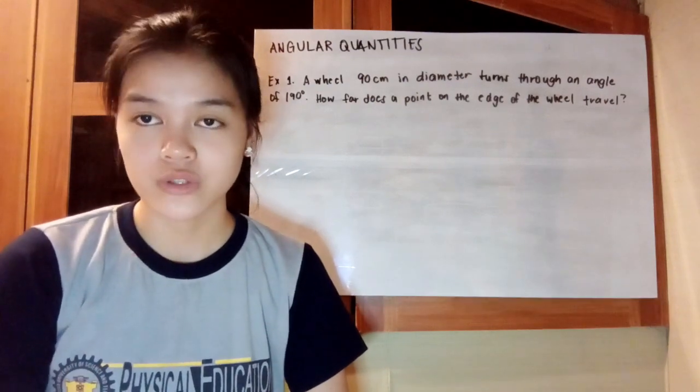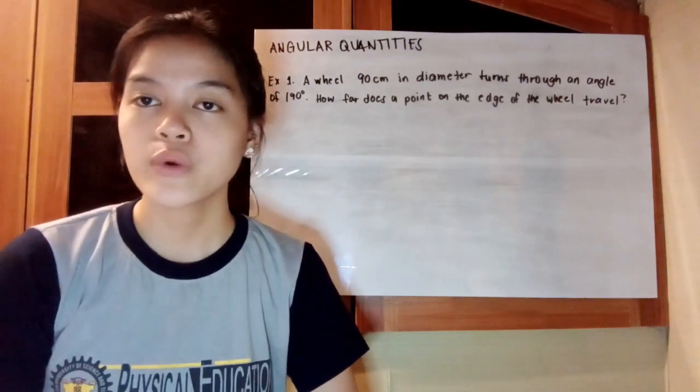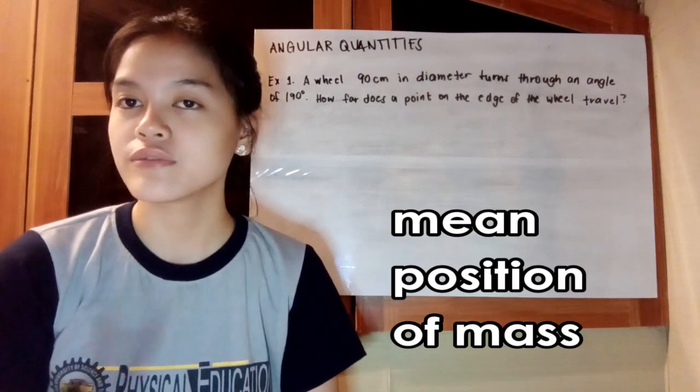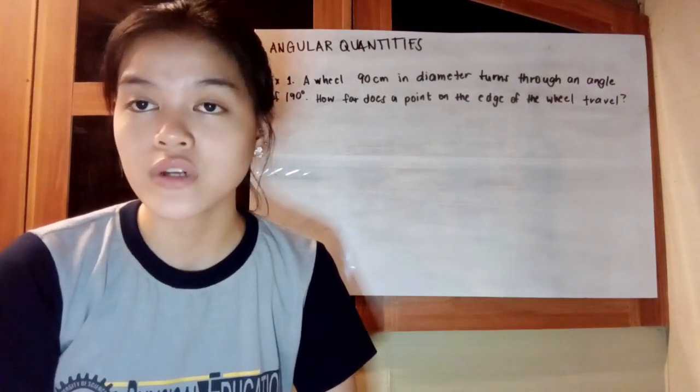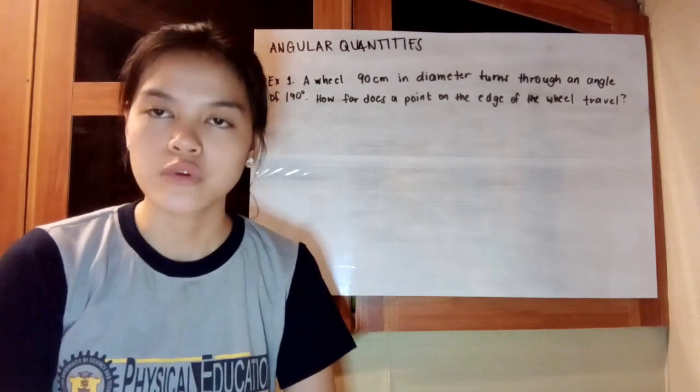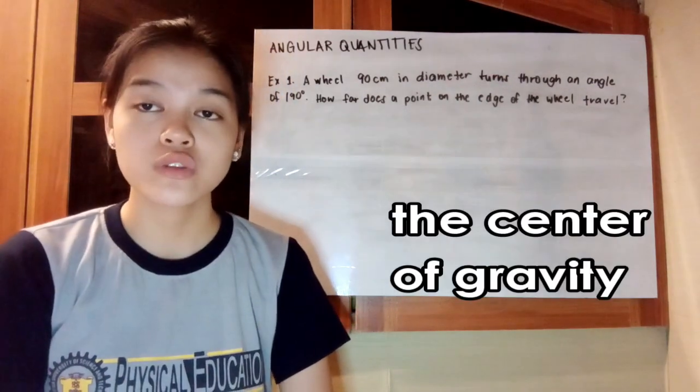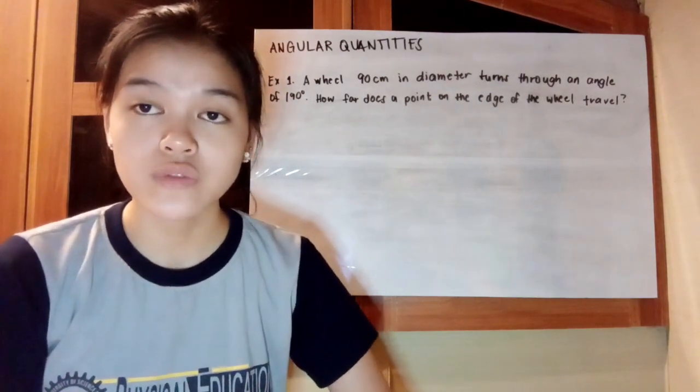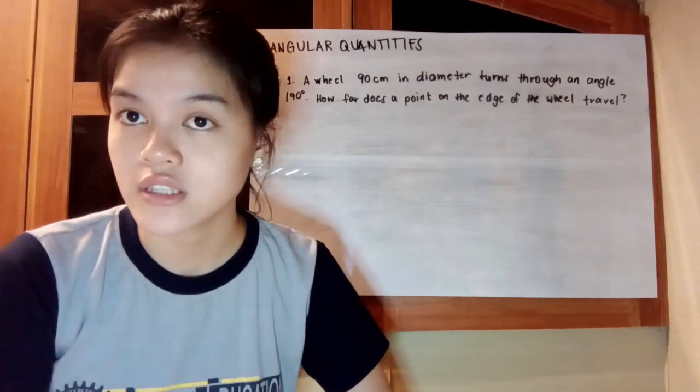In linear motion, or translational motion, we talked about displacement, velocity, and acceleration, and those are key quantities in linear motion. But this time, we're going to talk about angular quantities, which are the counterparts of linear quantities.